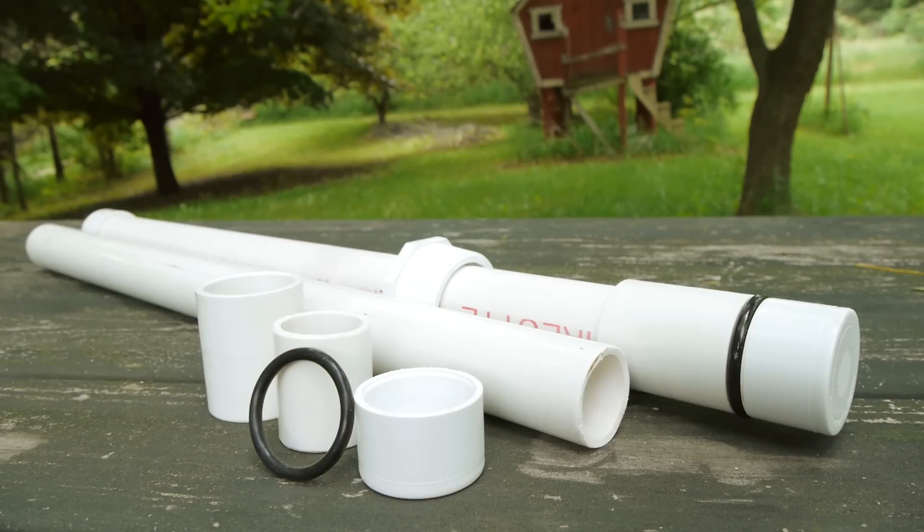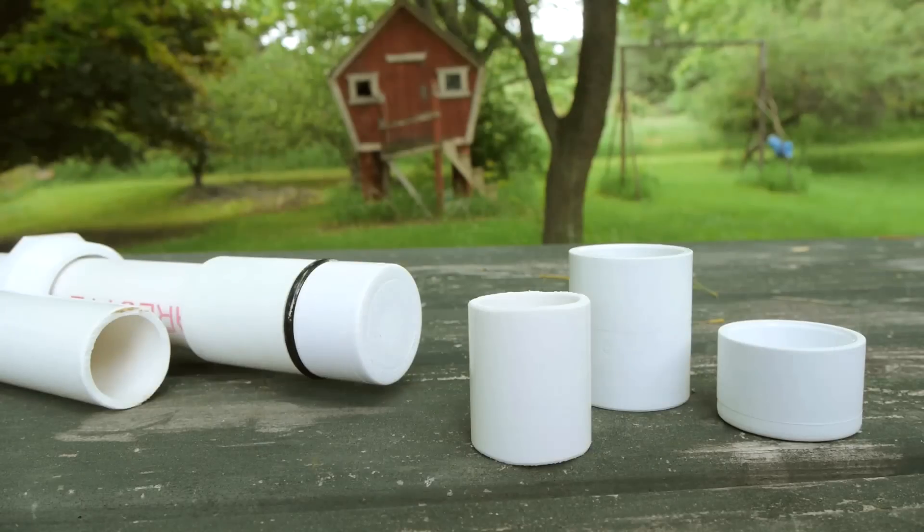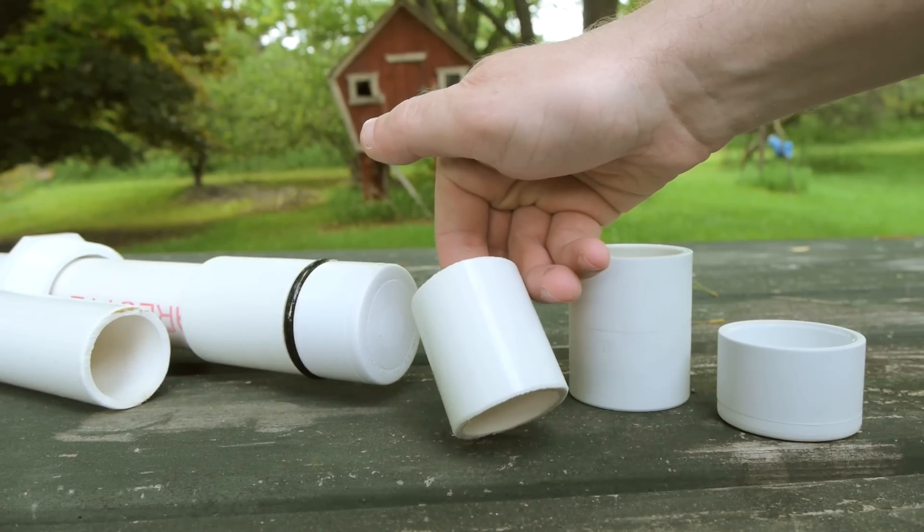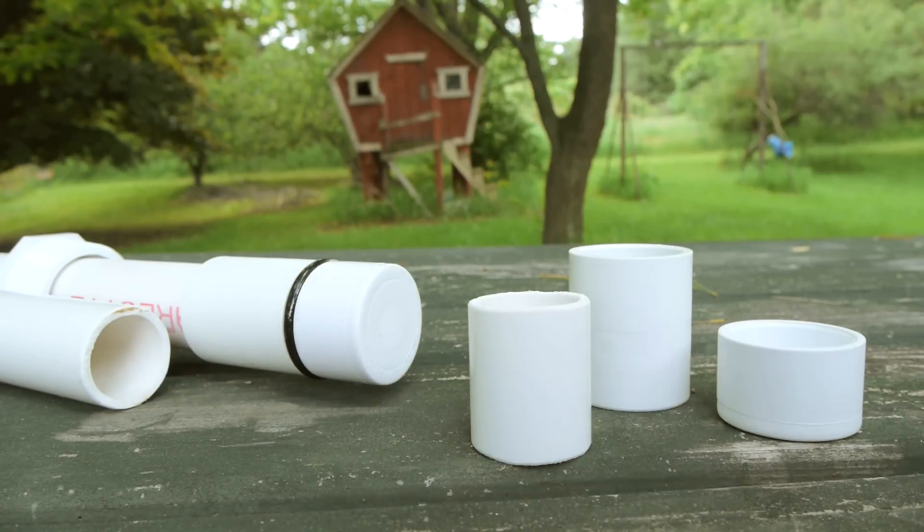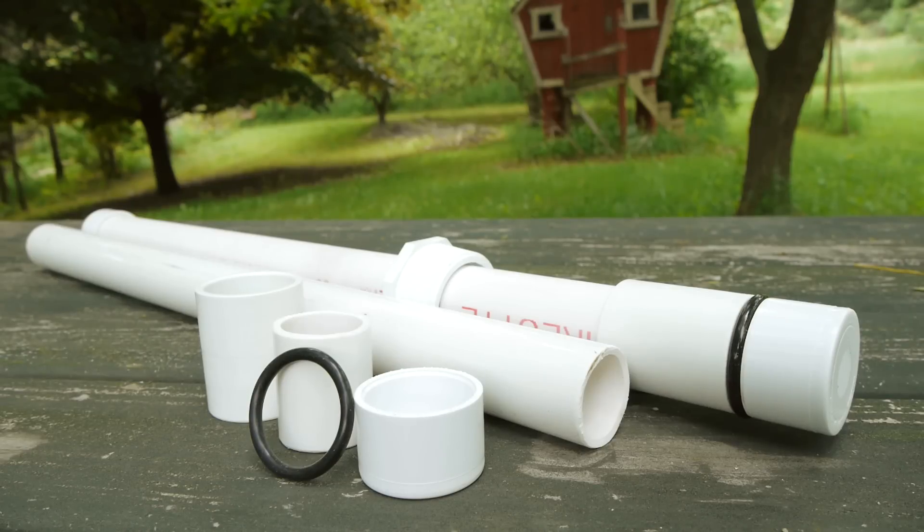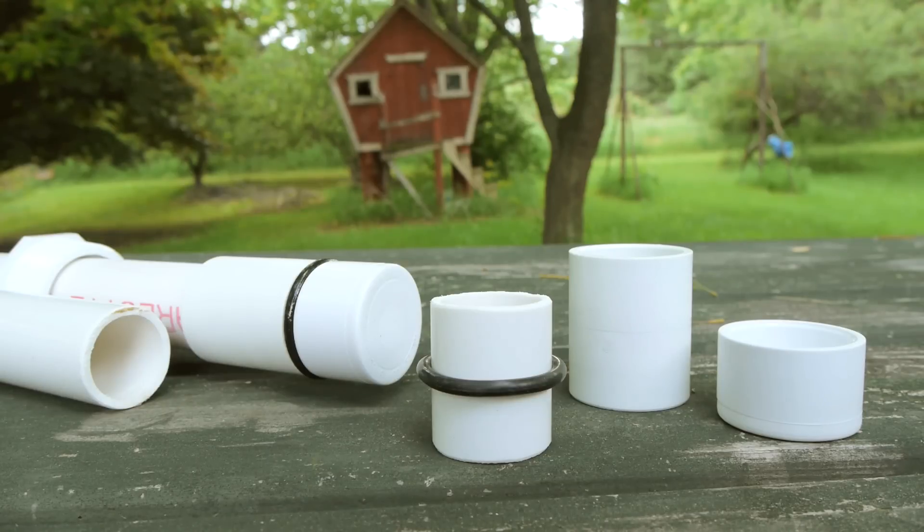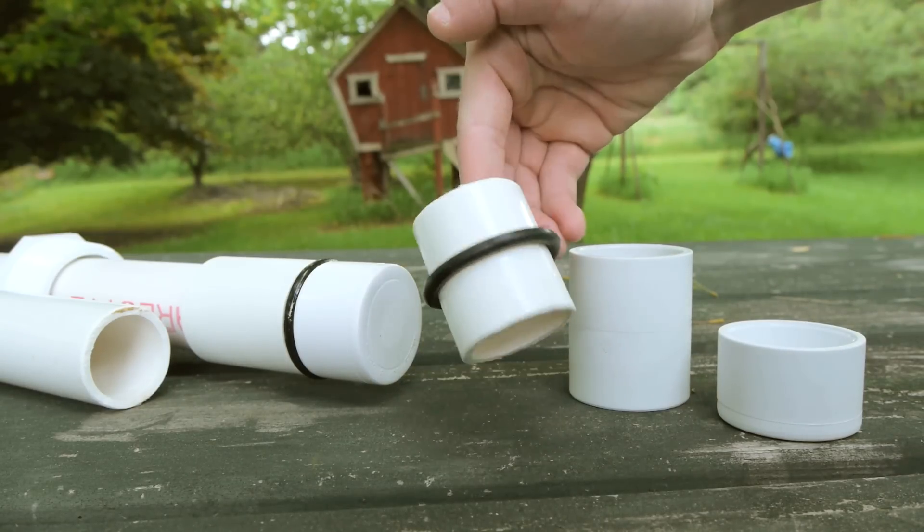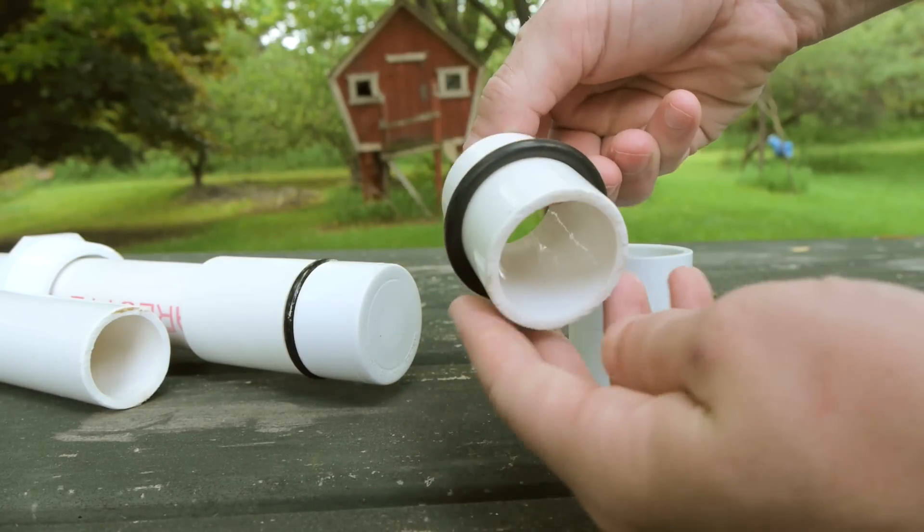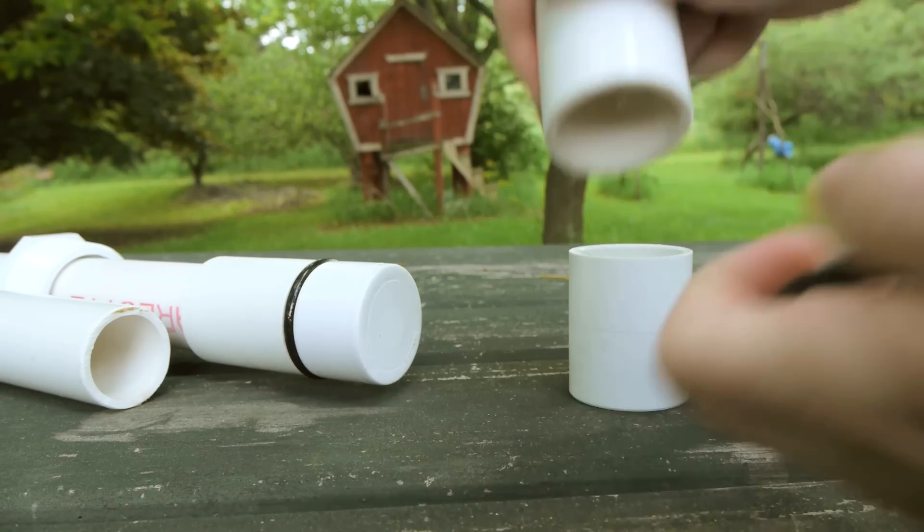The piston used for this project is made from 4 parts: an inch and 1 quarter end cap and coupling, and a 2 inch length of inch and 1 quarter pipe, and a large O-ring, 1 and 5 eighths inches in inner diameter, and 2 inches in outer diameter. This O-ring fits over the outside of the section of inch and 1 quarter pipe, and will make a perfect seal within the 2 inch diameter chamber.